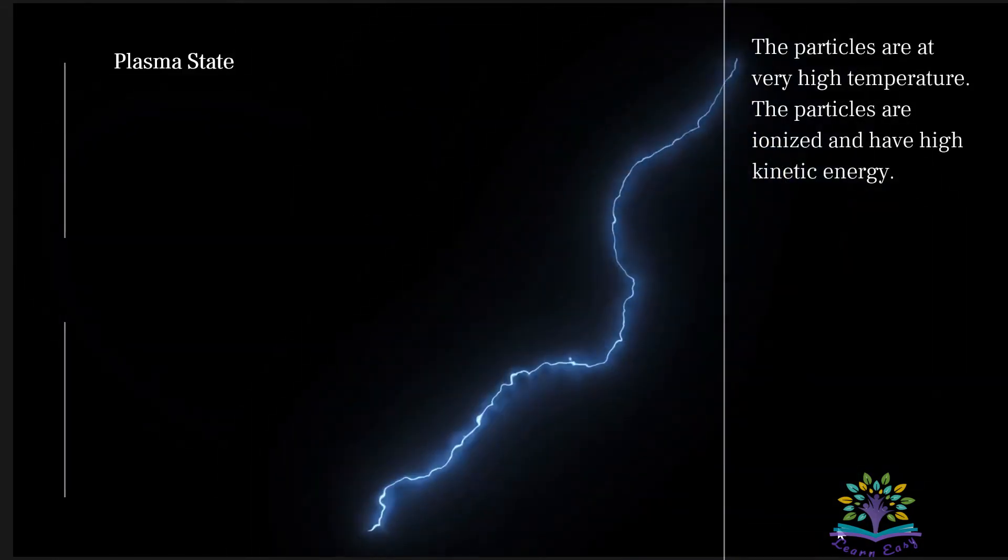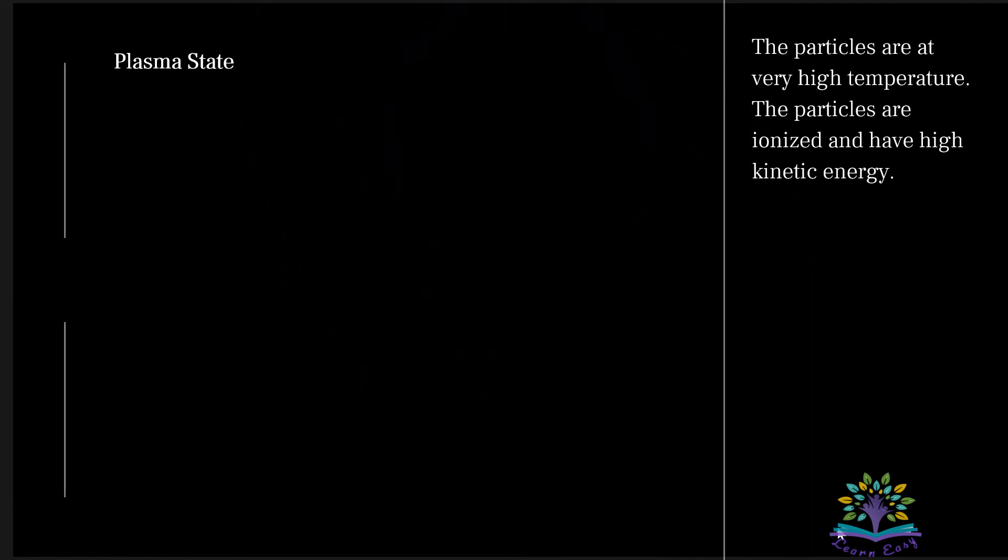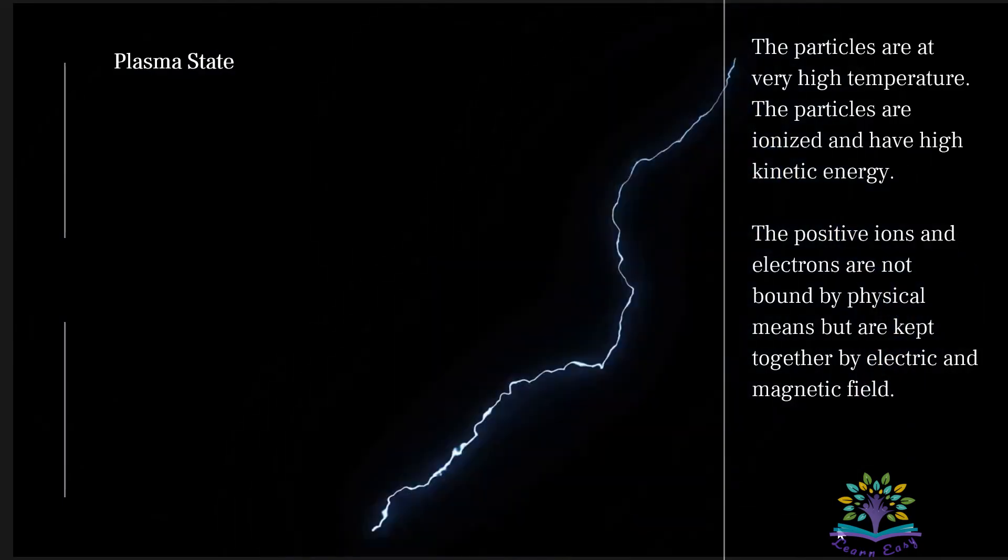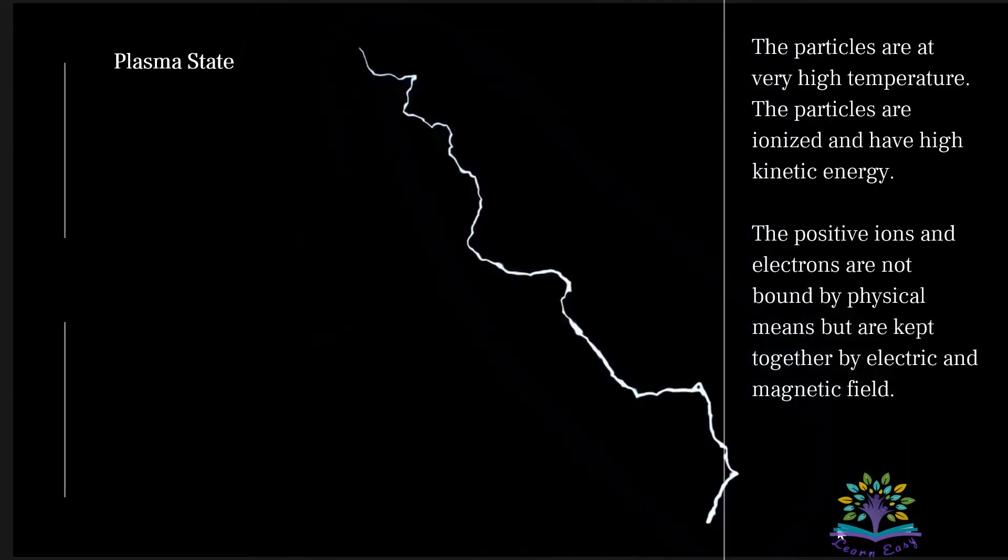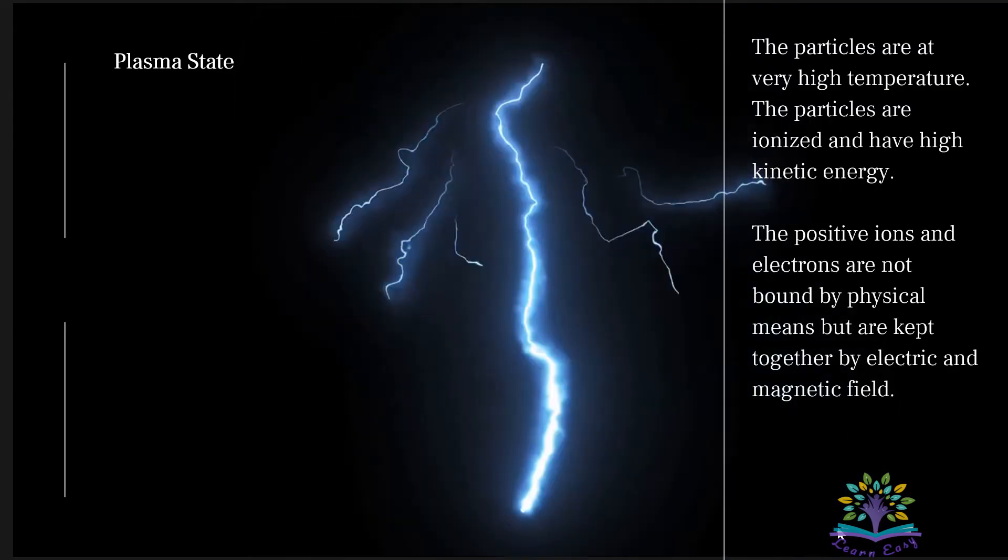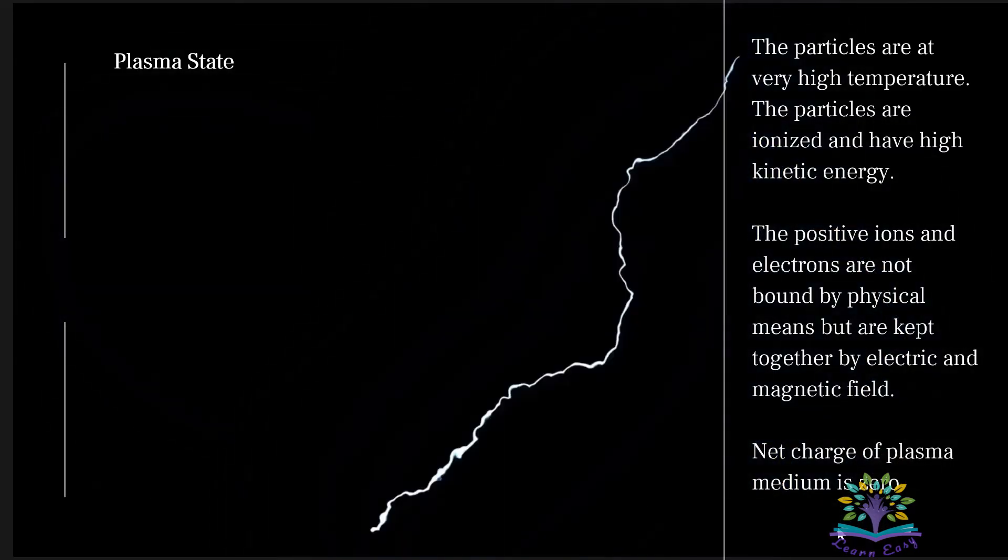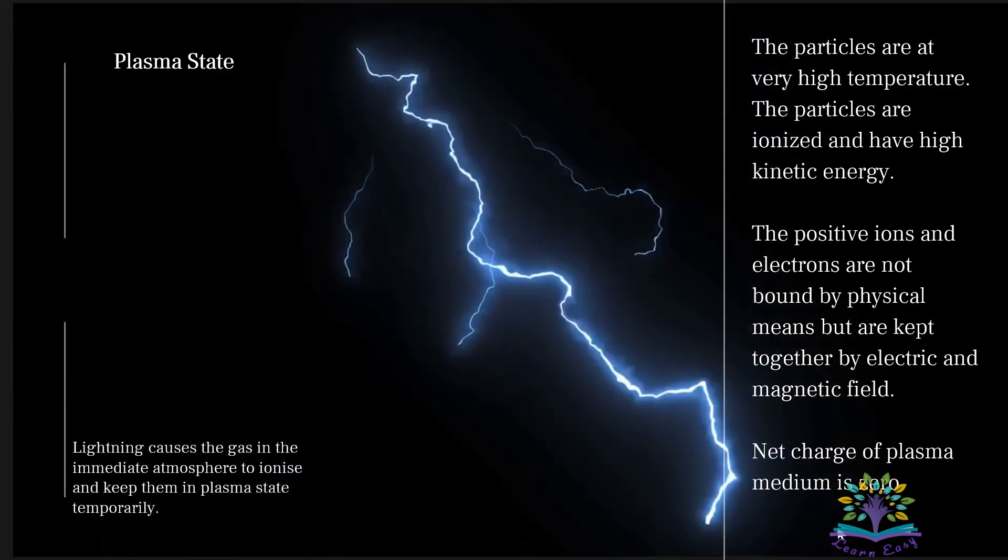Plasma state: The particles are at very high temperature. The particles are ionized and have high kinetic energy. The positive ions and electrons are not bound by physical means but are kept together by electric and magnetic fields. Net charge of plasma medium is zero. Lightning causes the gas in the immediate atmosphere to ionize and keep them in plasma state temporarily.